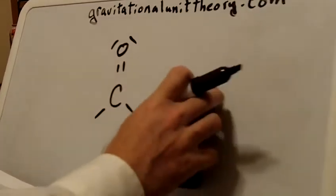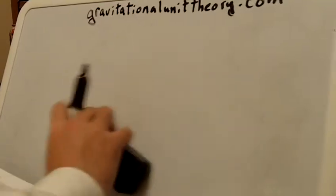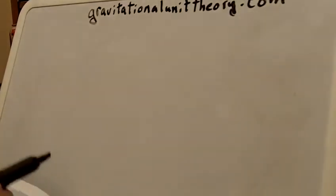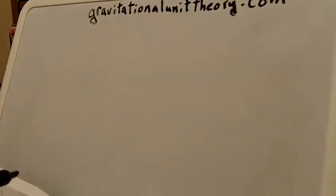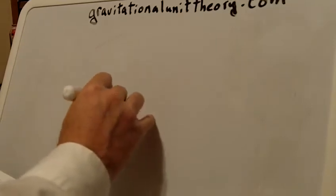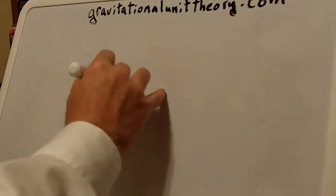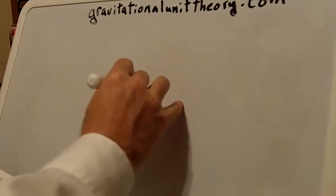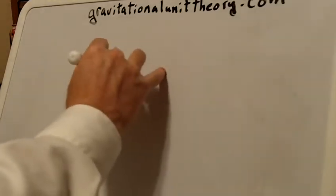Using vector bonding and the gravitational unit theory unified field theory, an aldehyde is drawn this way.